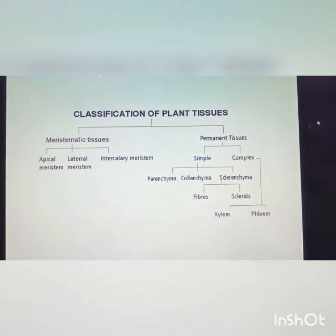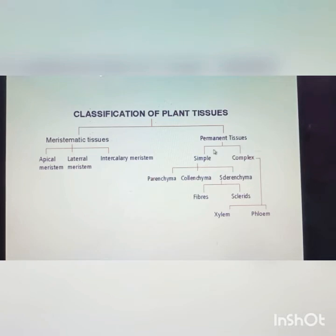Now the flowchart: classifications of plant tissues. Plant tissues are classified into two types — one is meristematic tissue, another one is permanent tissue. Meristematic tissues are divided into three: apical meristem, lateral meristem, and intercalary meristem. Permanent tissues are classified into two: simple tissue and complex tissue. Simple tissues are divided into three: parenchyma, colenchyma, and sclerenchyma. Complex tissues are divided into two: xylem and phloem.